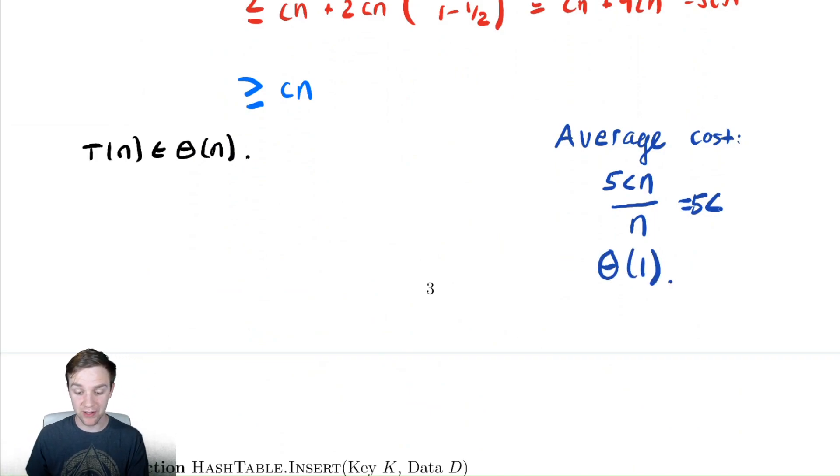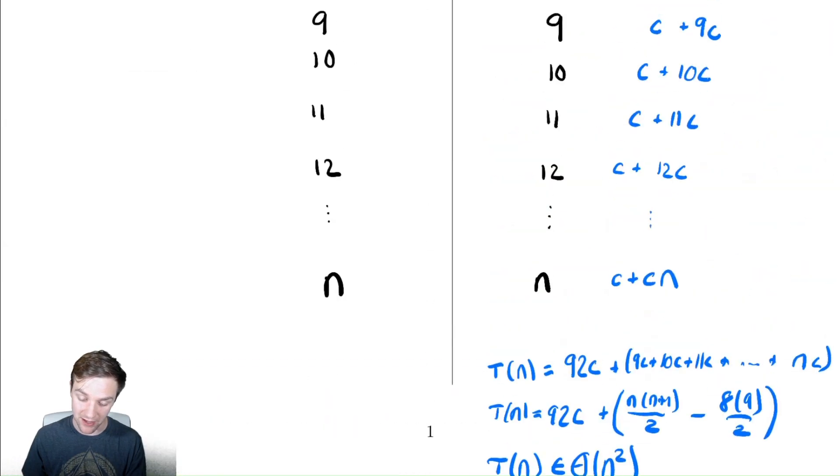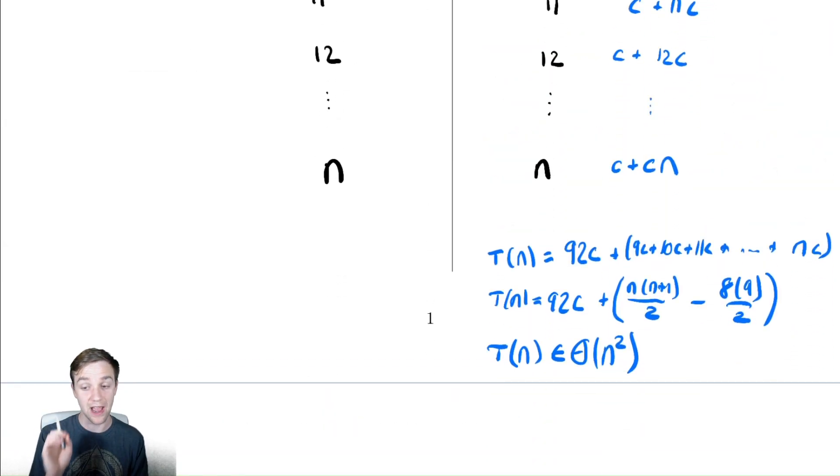That is much better than the one we investigated earlier, where if we did that same analysis here, we would get that our average cost was in theta of n, n squared divided by n, which is much worse than our runtime for our table doubling approach.